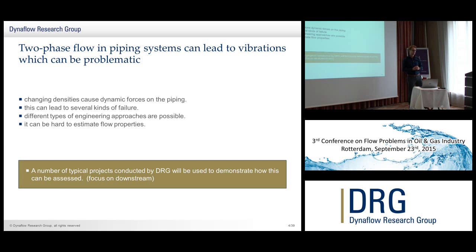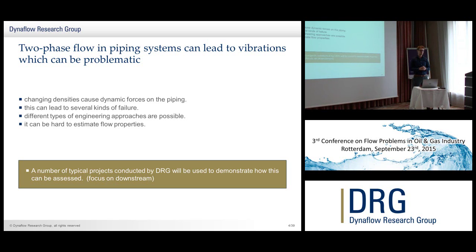These momentum fluctuations cause vibrations of the piping, which can be problematic and lead to different types of failure. You can use different types of approaches if you see such vibrations to handle them. Note that within this engineering process of tackling these issues, it is always quite hard to know all the details of your two-phase flow conditions — so always keep in mind which assumptions have to be made and how you know what is actually going on in these pipes.